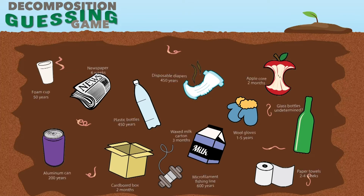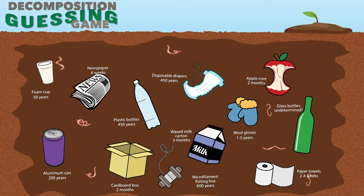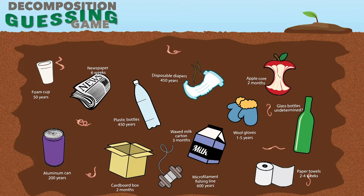Now look at the answers for the decomposition guessing game on screen. Things that are organic — meaning they naturally come from the earth — like the apple core, take about two months to decompose to the point where you don't recognize it anymore. That's how long it's supposed to take, and it leaves nutrients that benefit the environment. Wool gloves take one to five years, which is still a long time, but wool is a natural thread pulled from sheep — an organic compound. But take a look at non-organic items, specifically that plastic bottle: 450 years is how long it takes to break down — longer than any of us will be alive on Earth.